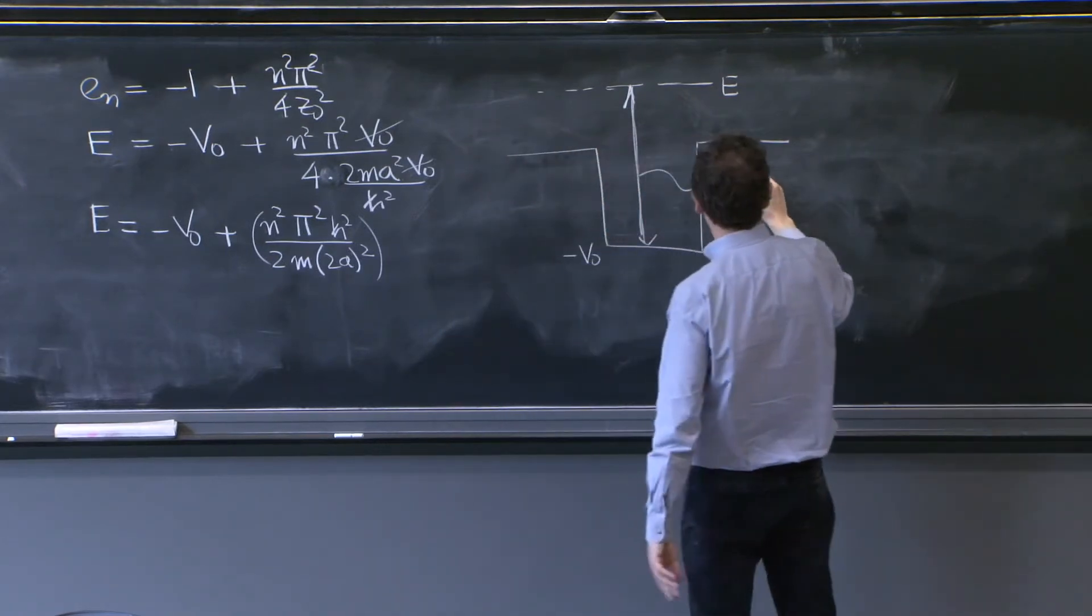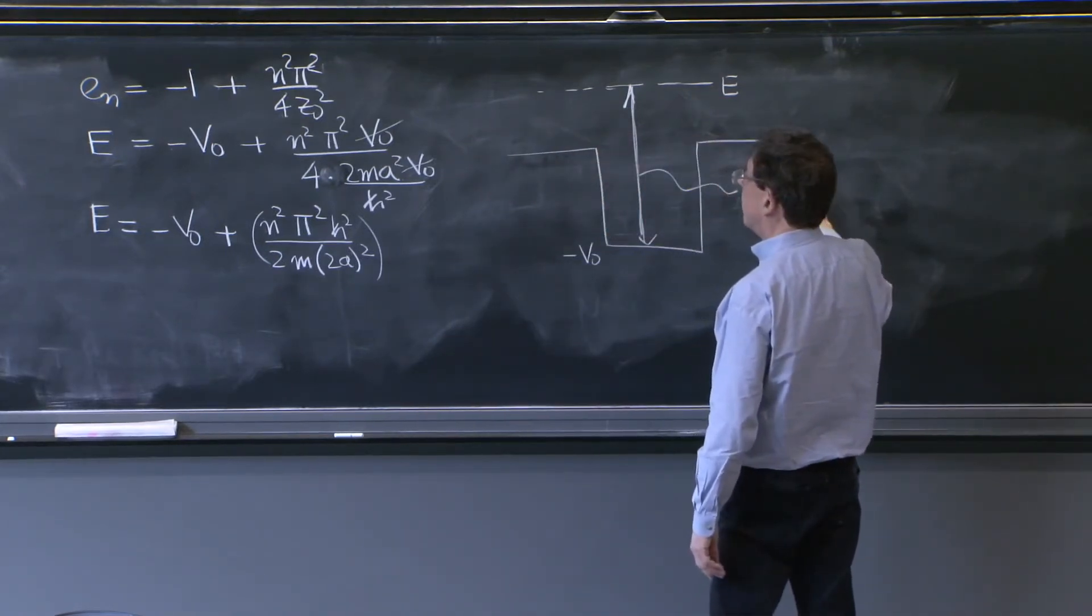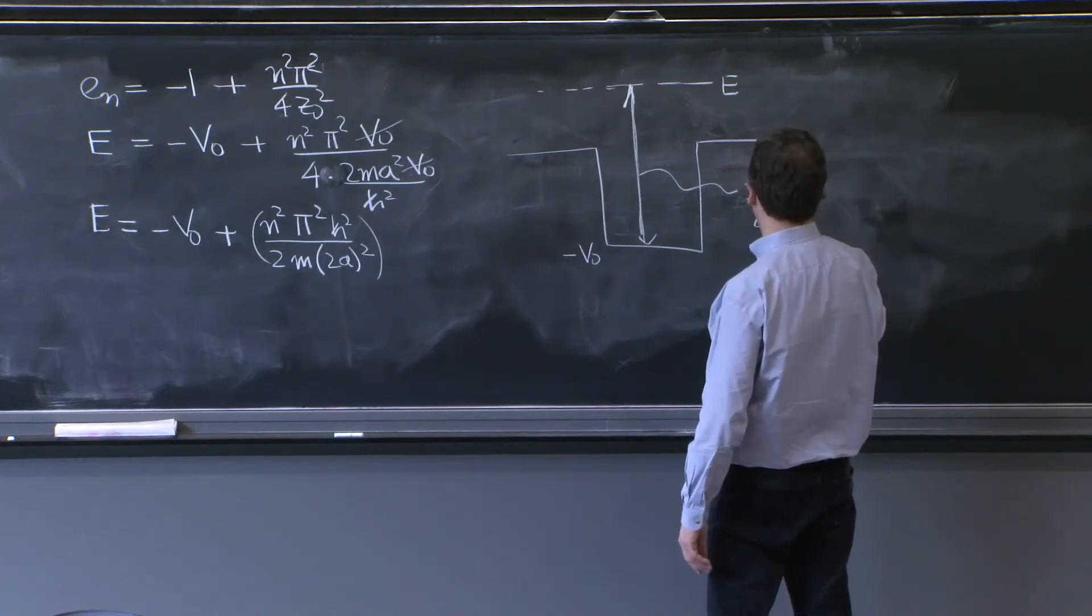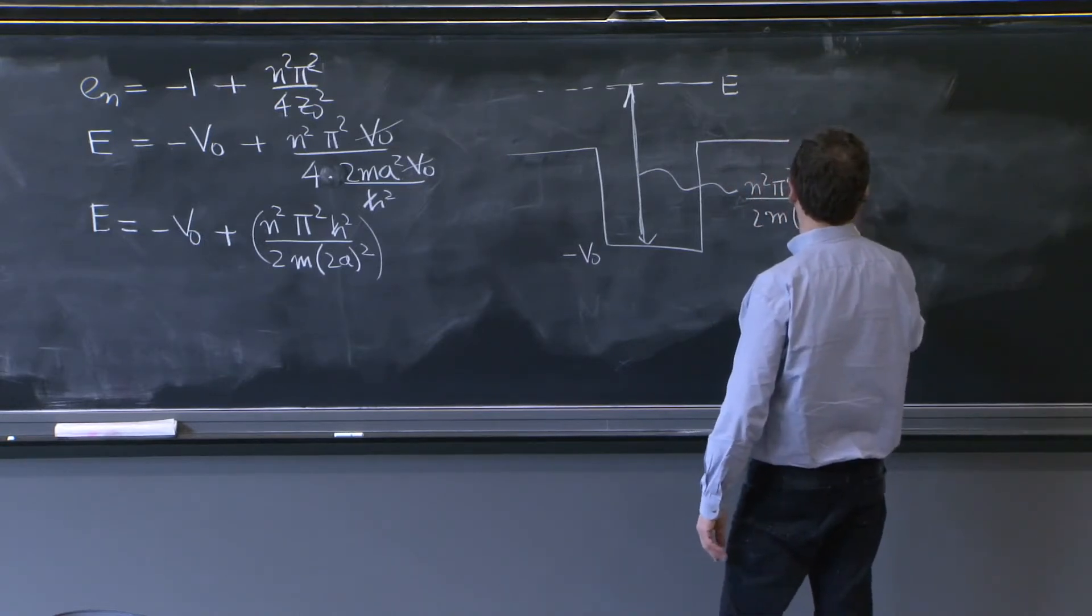So minus v0 plus this quantity, which is n squared pi squared h squared over 2m times 2a squared.